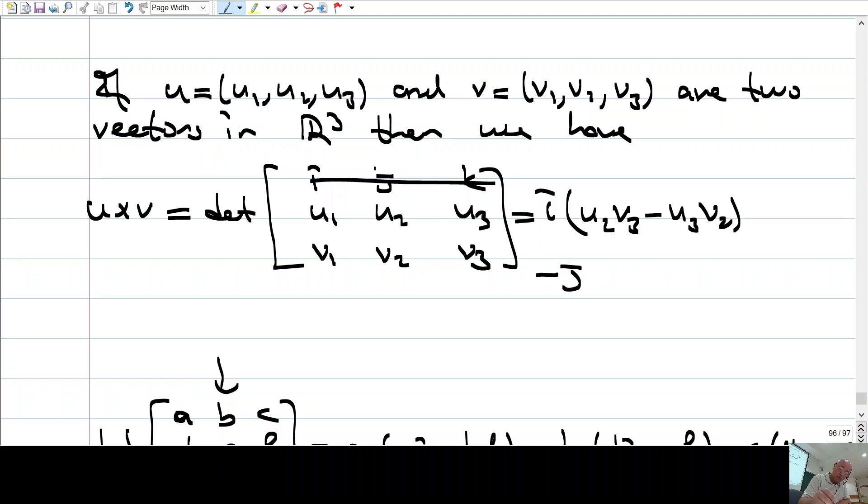You cross this one and this one. So, you have U1, V3, minus U3, V1, plus K. You take this one. Minus 1 to the power of 1 plus 3. Because this is A1, 3. So, minus 1 to the power of 1 plus 3 is just 4. So, it's plus 1. You cross this one and this one. So, U1, V2, minus V1, U2. Okay.